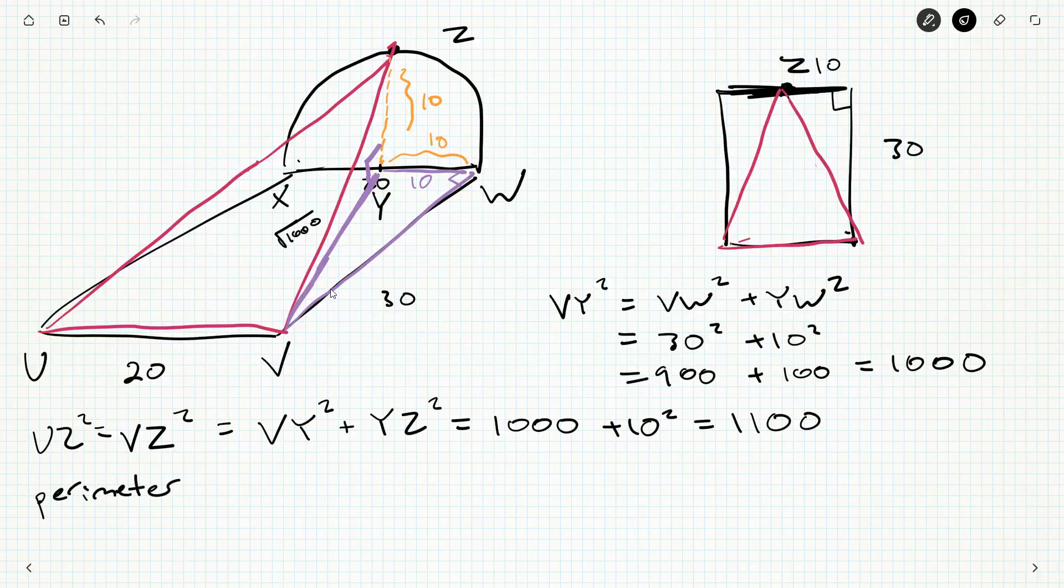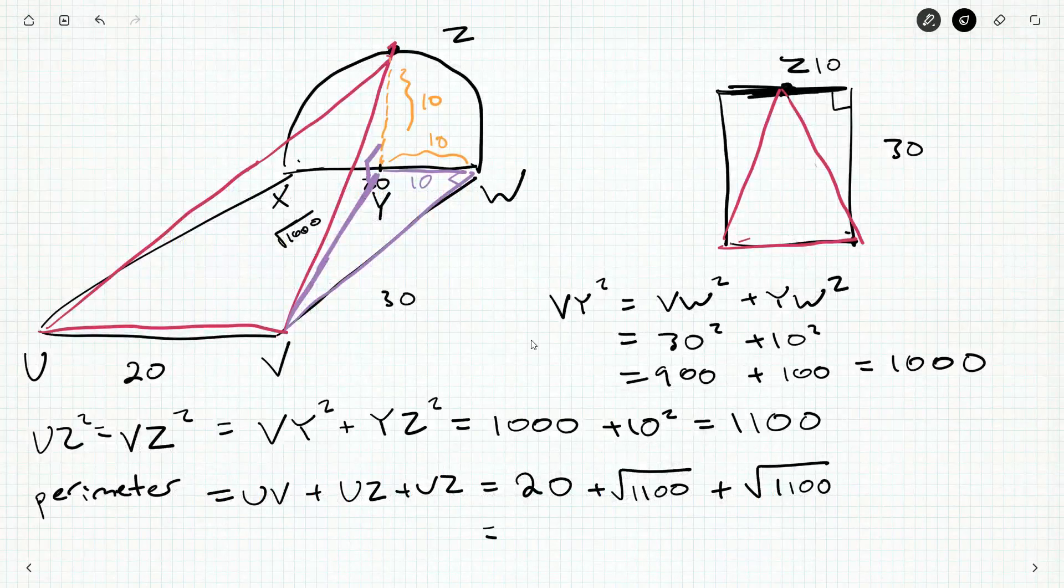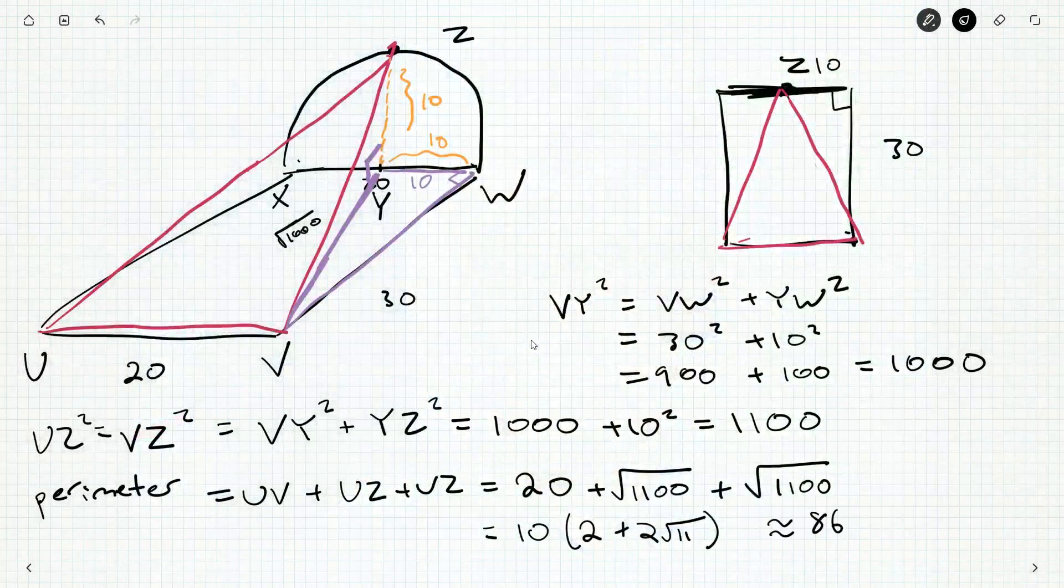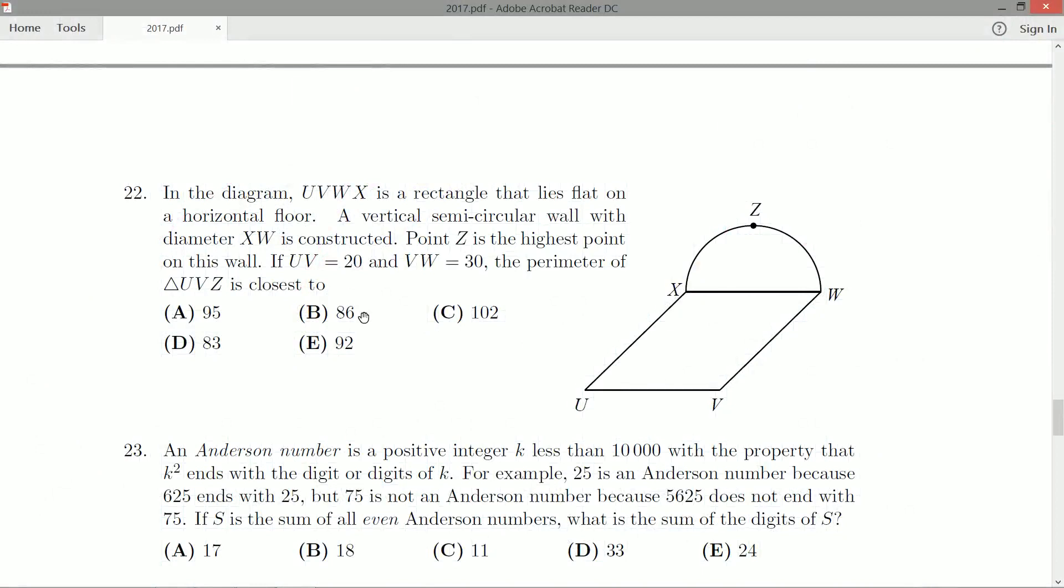So, what did we ask for? We asked for the perimeter. So, it's going to be UV plus UZ plus VZ. That's going to be 20 plus the square root of 1,100 plus the square root of 1,100. And did they ask for closest to? I think they did. That's closest to. What I'm going to do also is I'm going to pull out these tens. It's going to be 10 times 2 plus 2 root 11. And so, I'm just going to grab my calculator now. So, square root of 11 times 2 plus 2 is 8.633. Multiply that by 10, I get 86.33. So, I'll mark that down. 0.3324 if we really want more of this, but we're closest to 86. Is that one of the options? It absolutely is.